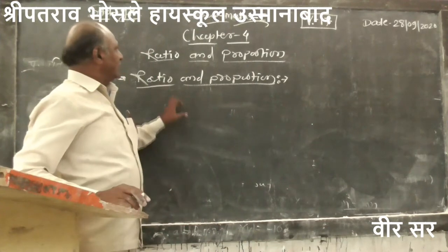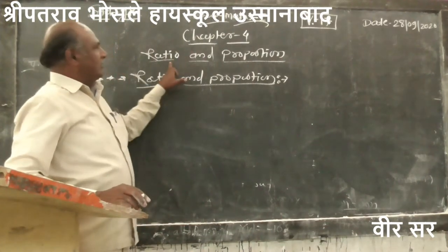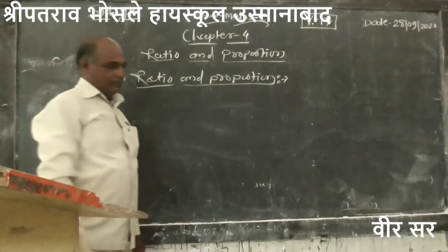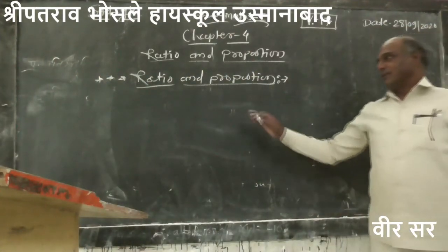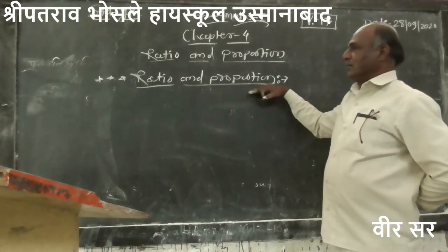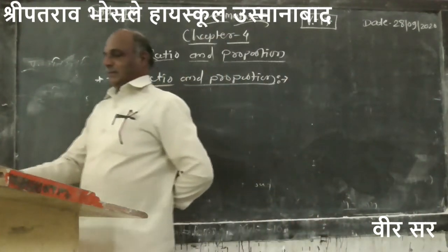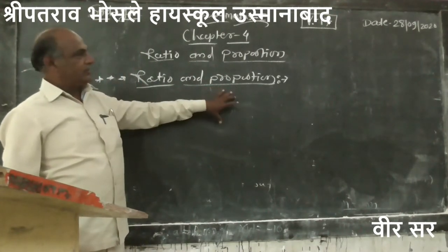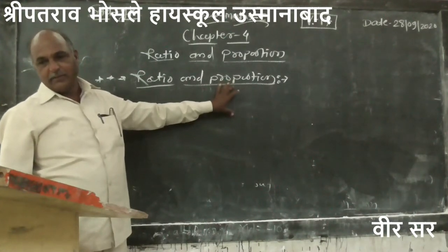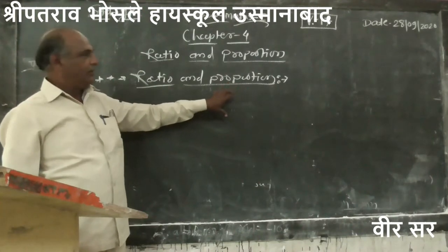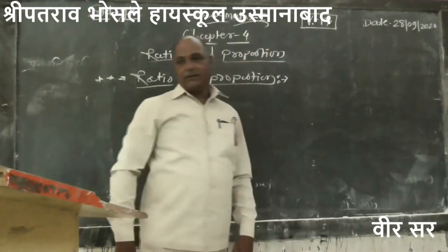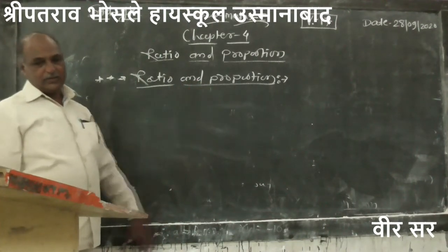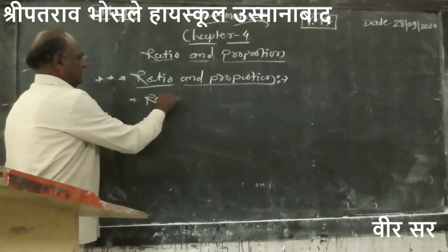Chapter Number 4: Ratio and Proportion. In this chapter we are studying first of all the general examples of ratio and proportion. We take an area example, and here in this example of ladu we see how we have prepared the Rava ladu. This example is in the form of ratio and proportion. First of all, we are studying the concept of ratio.